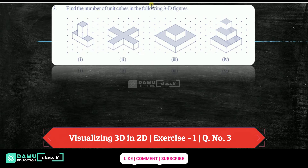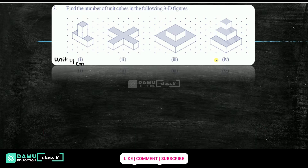In this module, we are going to discuss how to find the number of unit cubes in the following 3D figures. Unit cubes means 1 unit — let's take 1 centimeter. So unit cubes means 1 centimeter cubes.